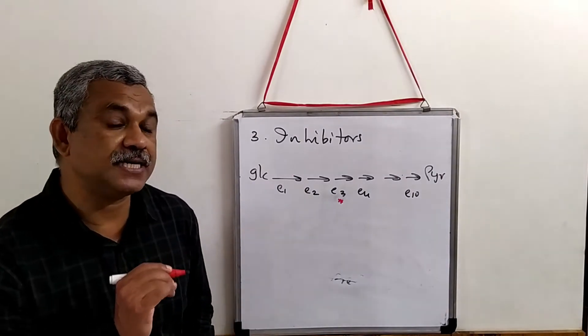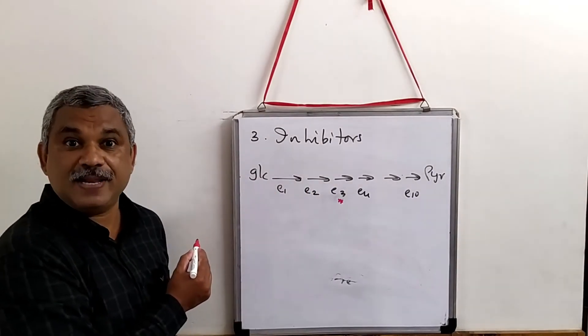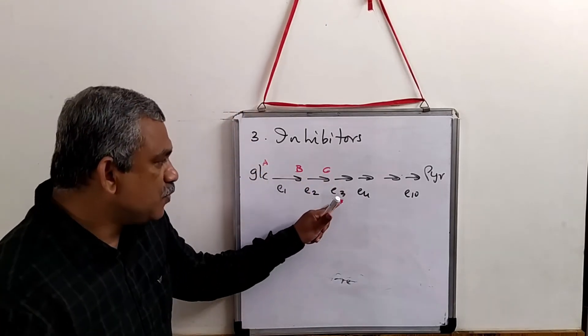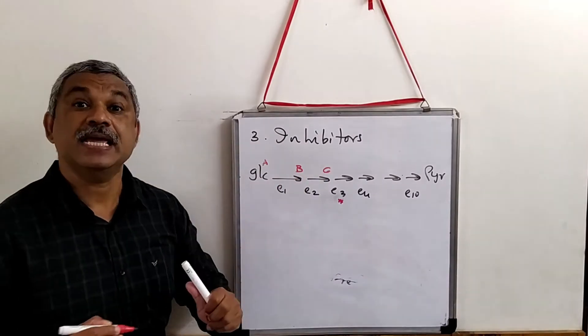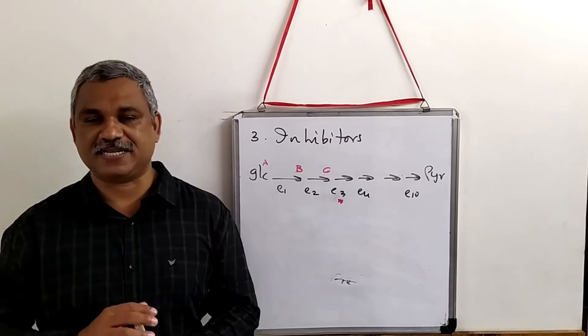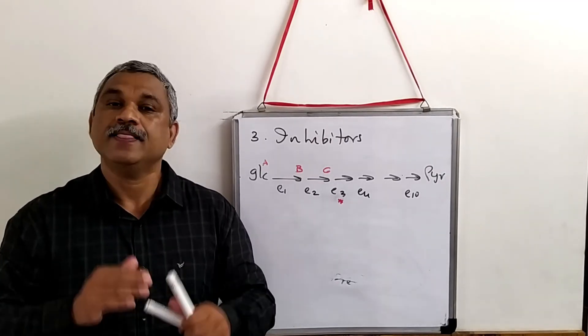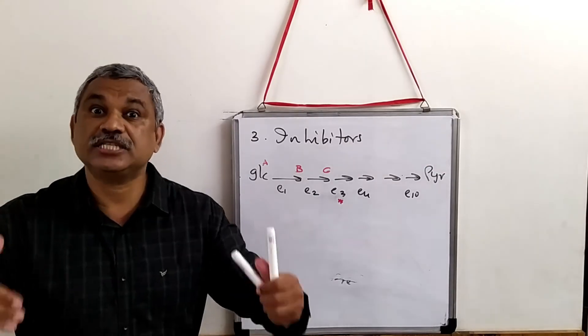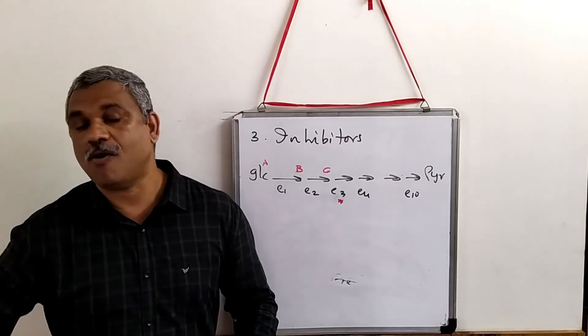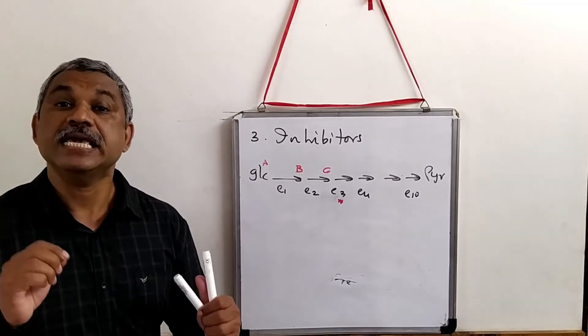If E3 is inhibited, what is likely to happen? These intermediates will get accumulated. Assume this is A, B, and C. If you inhibit this enzyme, C, B, A, etc. can get accumulated. This is exactly what is done in inhibitory studies. They add an inhibitor into the system, and when the reaction stops with the inhibitor, they isolate all the components and determine their concentrations. This is by using inhibitory studies.